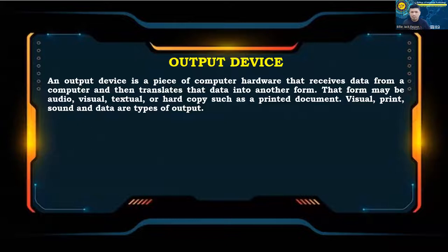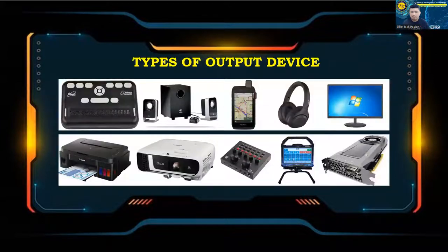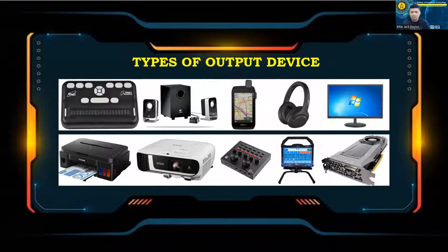An output device is a piece of computer hardware that receives data from a computer and translates that data into another form. That form may be audio, visual, textual, or hard copy such as a printed document. Visual, print, sound, and data are types of output. Examples of output devices include Braille readers, computer speakers, GPS, headphones, monitors, printers, projectors, sound cards, speech generating devices, and video cards.